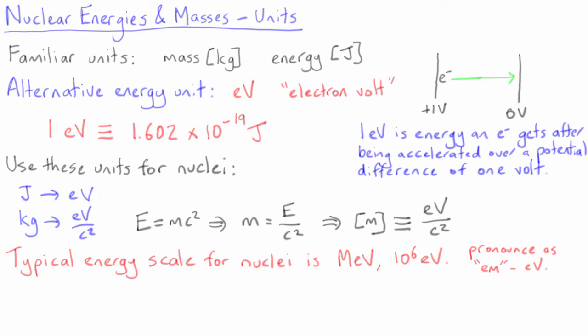As some examples of typical energies and masses measured in these units, the masses of a bare neutron and a bare proton are 939.6 MeV over c squared and 938.3 MeV over c squared, respectively.